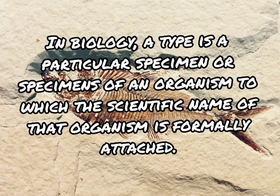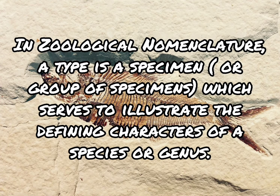In biology, a type is a particular specimen or specimens of an organism to which the scientific name of that organism is formally attached. In zoological nomenclature, a type is a specimen or group of specimens which serves to illustrate the defining characters of a species or genus.